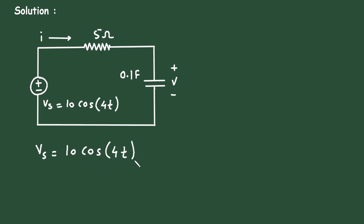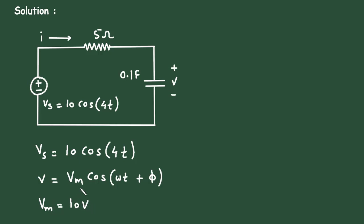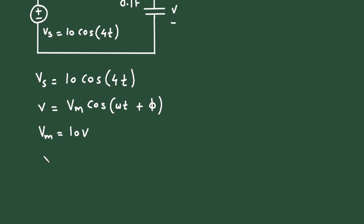If we compare this with the standard equation V = Vm cos(ωt + φ), then Vm is equal to 10 volts — Vm is the maximum voltage. This omega is the angular frequency, which is equal to 4 radians per second. The value of phi is 0, so phi = 0.